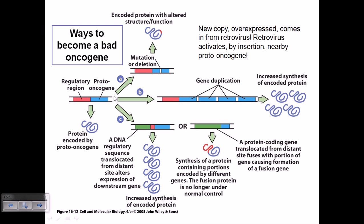Now in this case we will be seeing what are the ways to become a bad oncogene. We know the concept of proto-oncogene and oncogene. If you don't know the concept, please go back and see my video about proto-oncogene and the genetic basis of cancer — you will find a detailed view there. Then come back and look at this video, otherwise it will be difficult to understand.